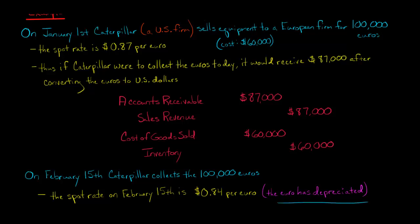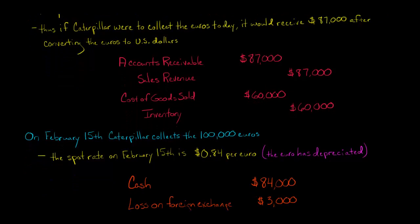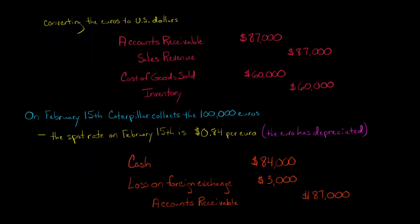So it used to be 87 cents per euro, but now it's 84 cents per euro. So there was a change of 3 cents per euro. We would say that the euro has depreciated relative to the U.S. dollar. So now it costs fewer U.S. dollars to buy a euro. So what does that mean for us?